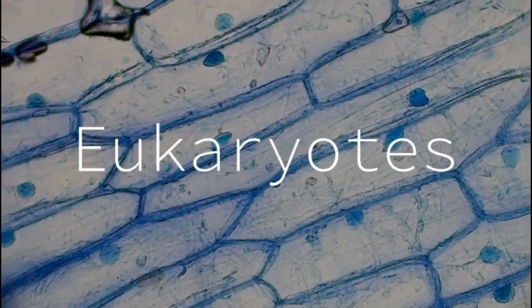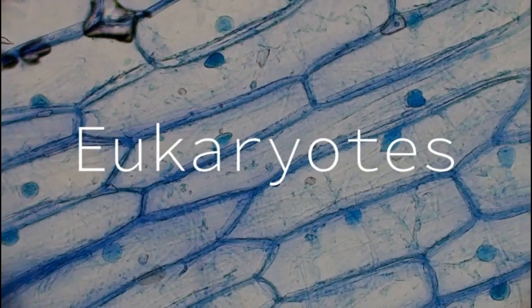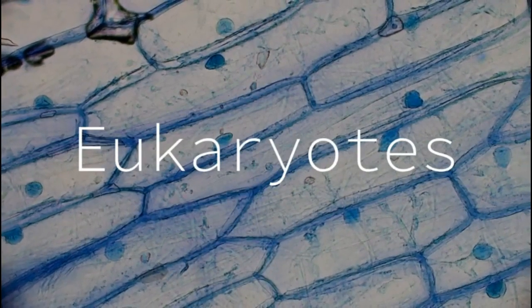Other cells are more complex. These are called eukaryotes. They have organelles inside of them.